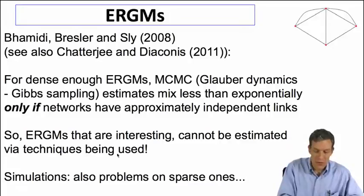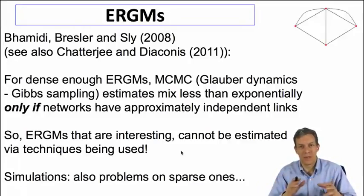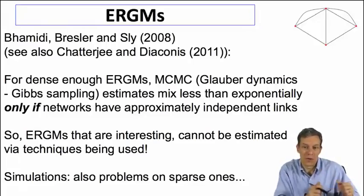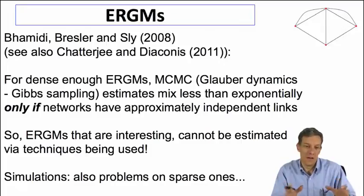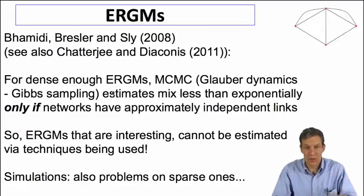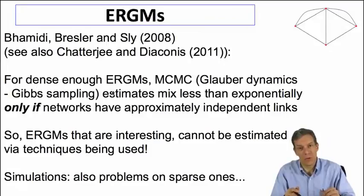So ERGMs that are interesting, the ones where other kinds of things are present and links aren't approximately independent, those are the reasons we're looking at ERGMs. Those can't be estimated via these techniques, at least in a class of dense ones, and actually there's going to be some problems even on sparse ones.